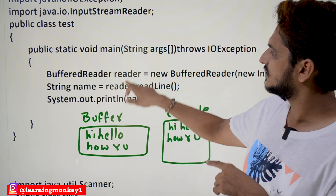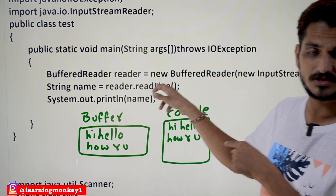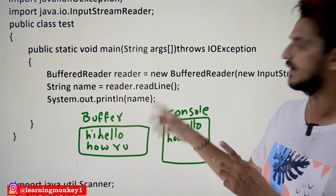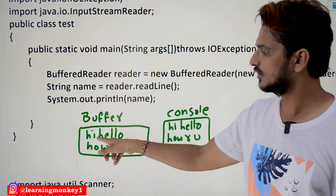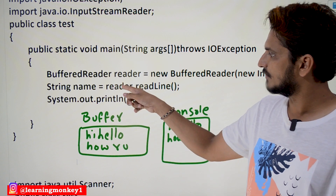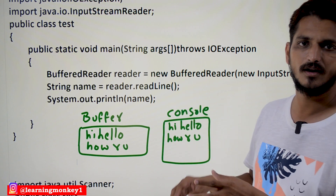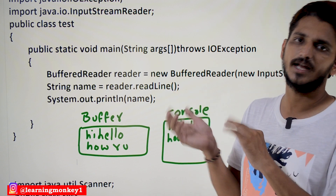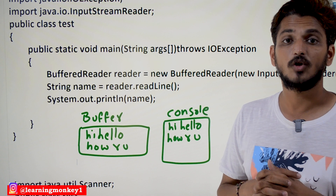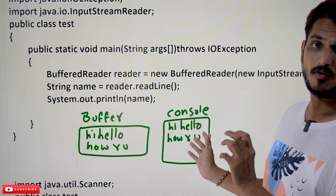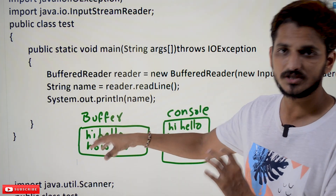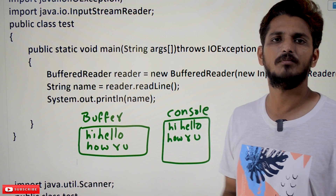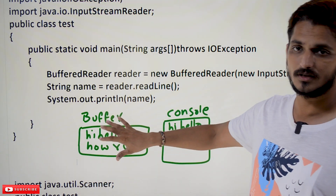For example: String name = reader.readLine(). Here 'reader' is the object of BufferedReader, and readLine() is a method in BufferedReader class that reads data line by line — it reads the first line from the buffer. If you call this method again, it reads the next line, and so on. This way, you read the entire data into the buffer once and access it quickly without going to the console each time.